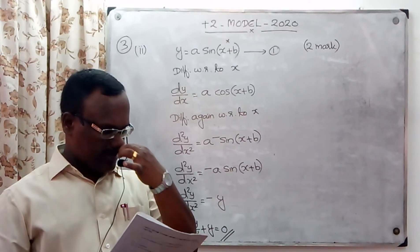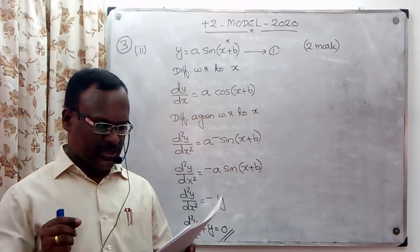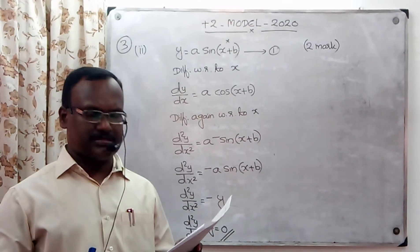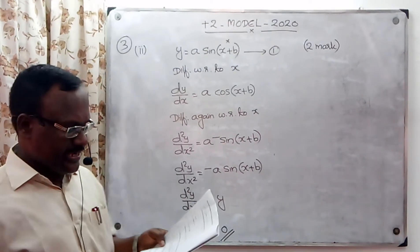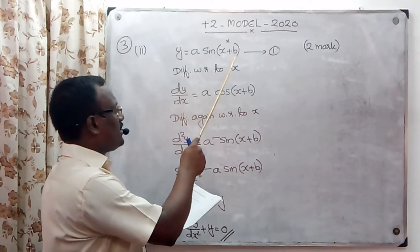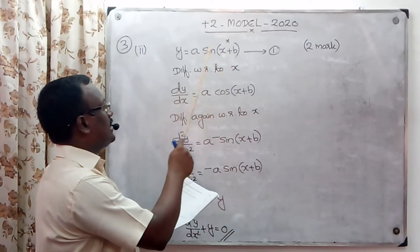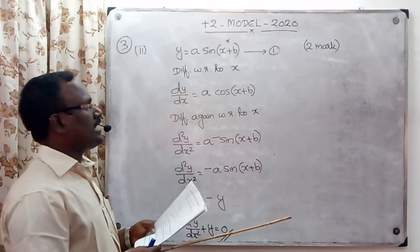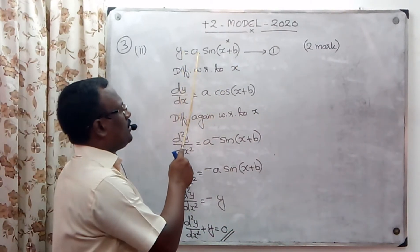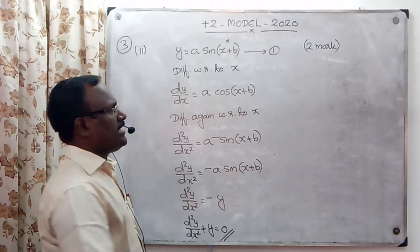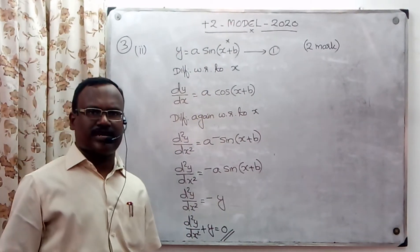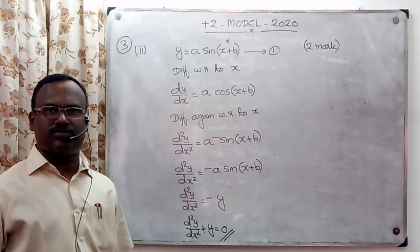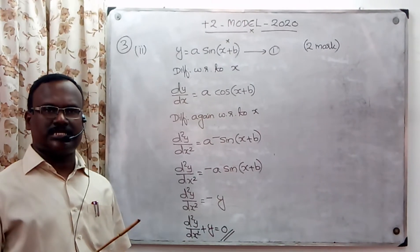Q3 is the second question. Form the differential equation representing the family of curves y equal to a into sin of x plus b, where a and b are arbitrary constants. This family of curves represents the differential equation we need to find.